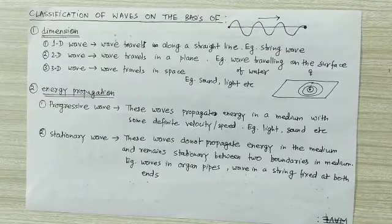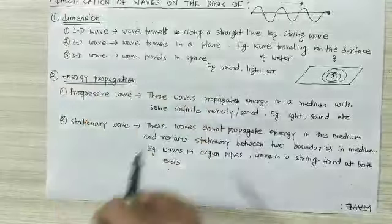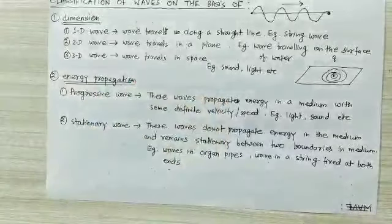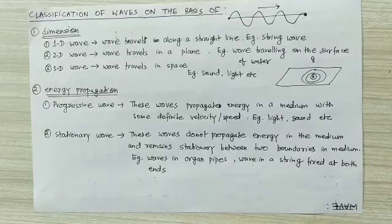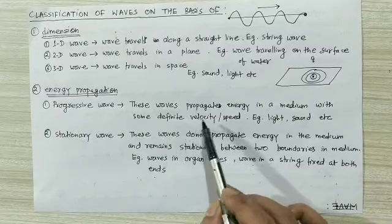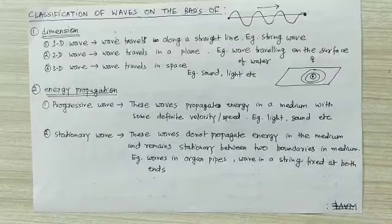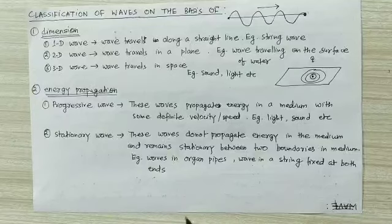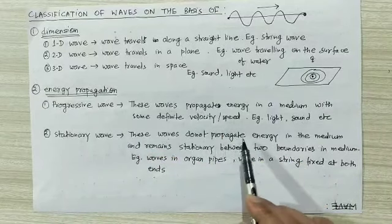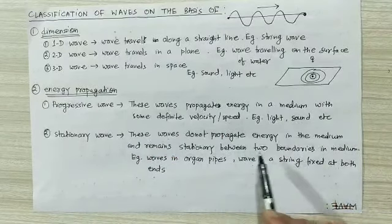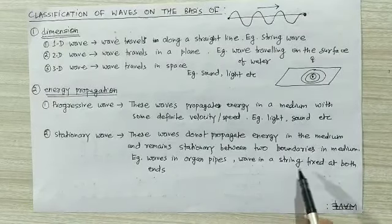Now we will see the classification of waves on the basis of energy propagation. There are two types: progressive wave and stationary wave. We will study these in depth later — for now, just remember the definitions. Progressive waves propagate energy in a medium with some definite velocity or speed. Examples are light wave and sound wave, because disturbance travels from one place to another. Stationary waves do not propagate energy in the medium, and remain stationary between two boundaries. Examples are waves in organ pipes and waves in a string fixed at both ends.